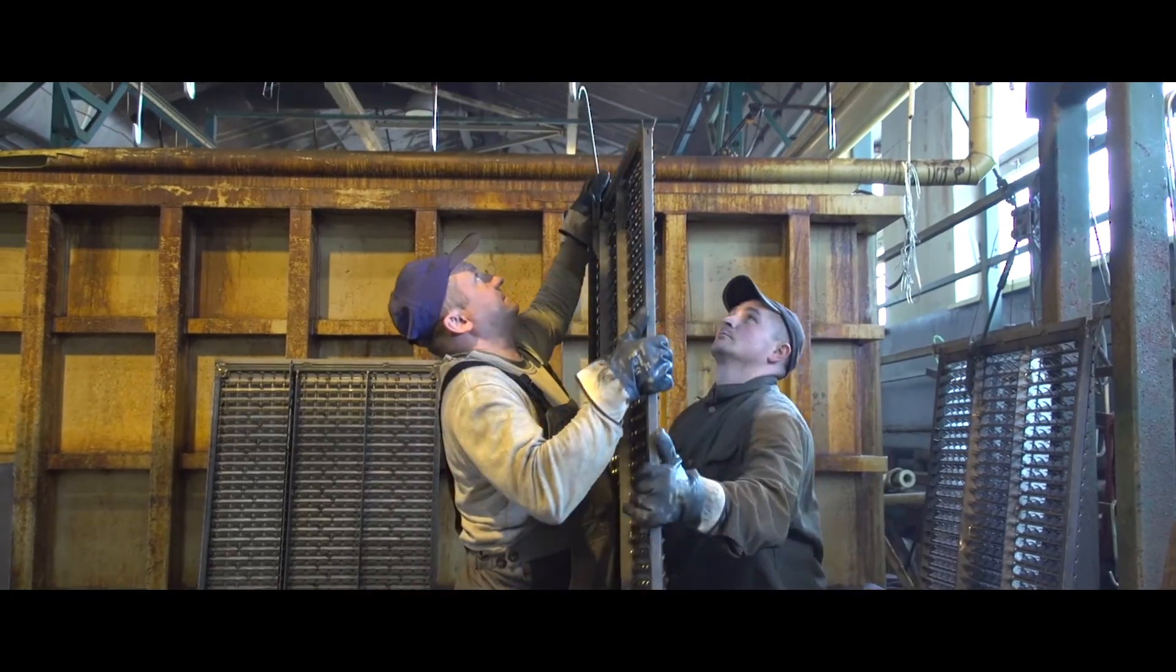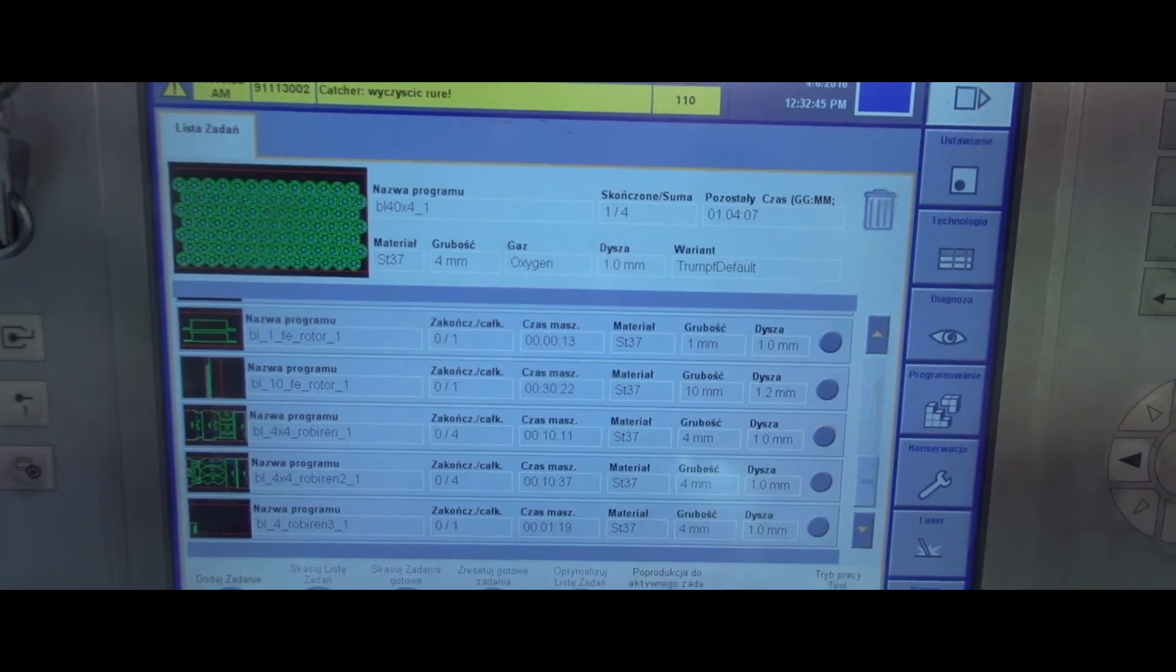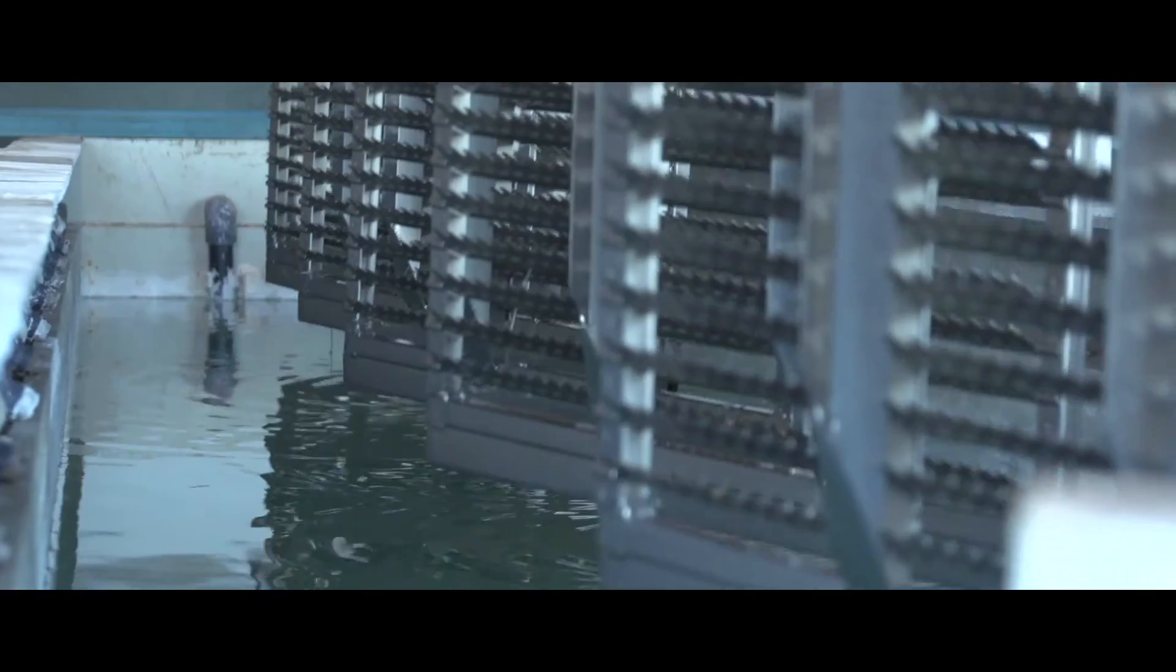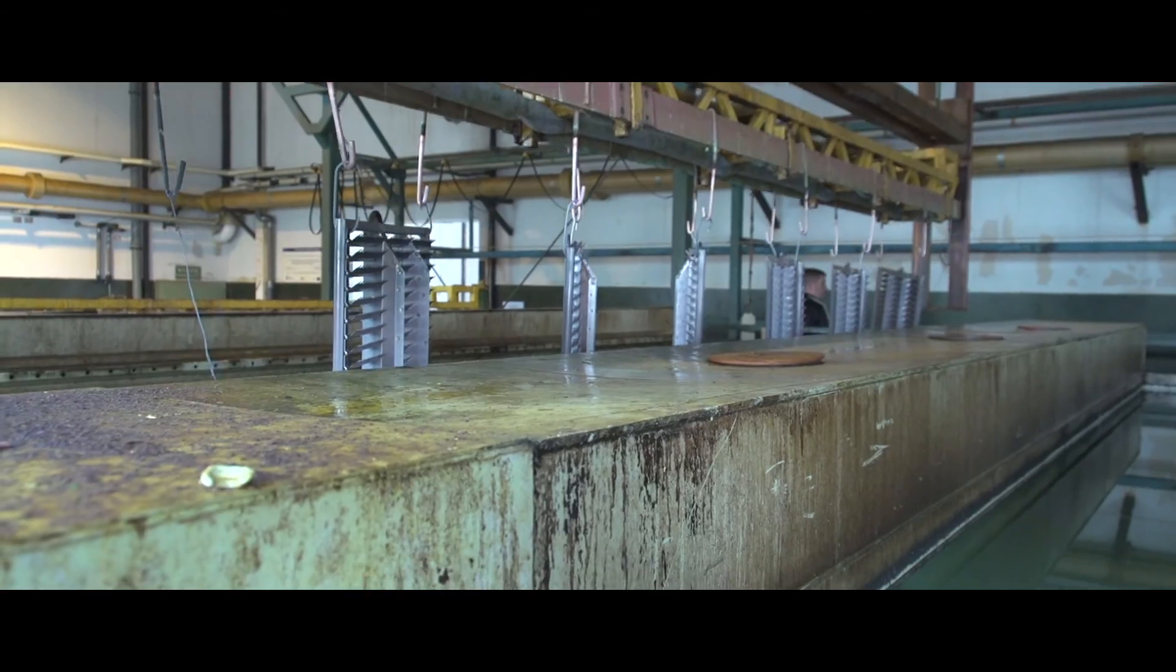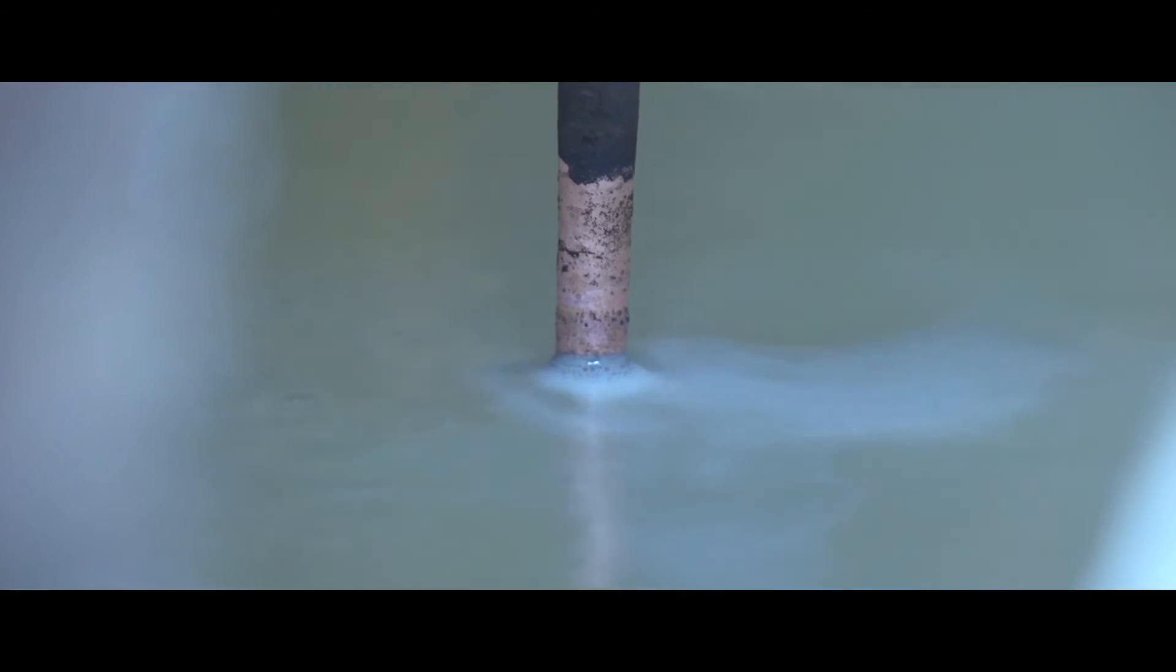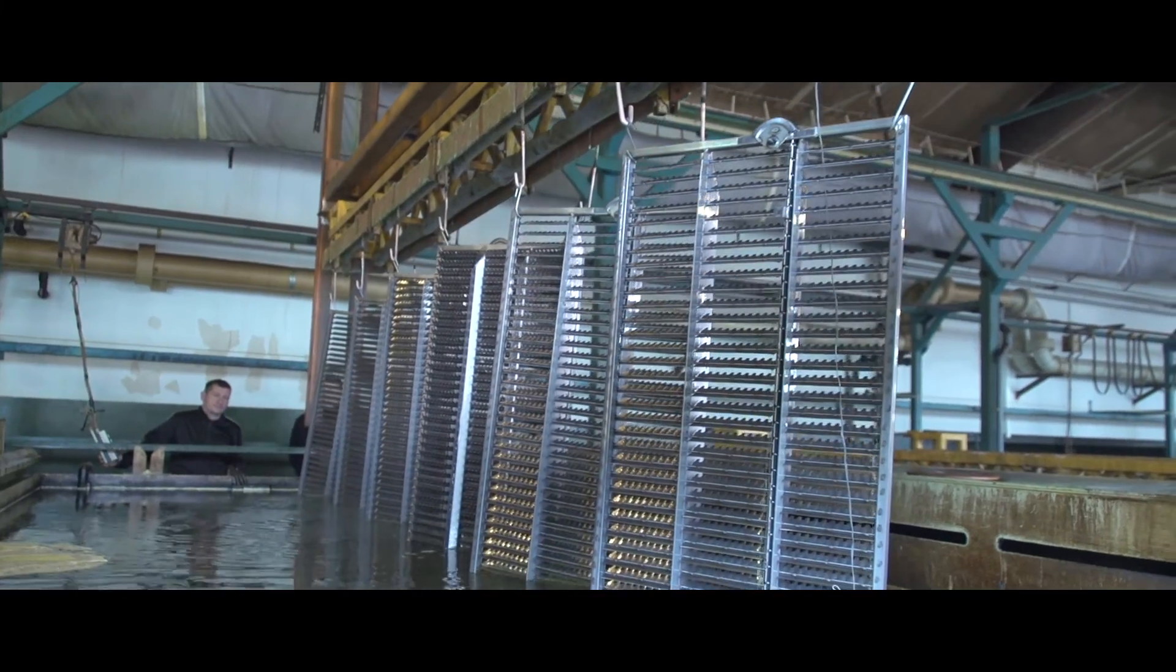Ostatnim procesem jest cynkowanie galwaniczne, czyli nałożenie zabezpieczeń i powłok antykorozyjnych na przygotowane wcześniej sita bądź elementy. Powierzchnia pokryta powłoką cynkową jest kilkanaście razy bardziej wytrzymała na niekorzystne oddziaływanie wody i powietrza.